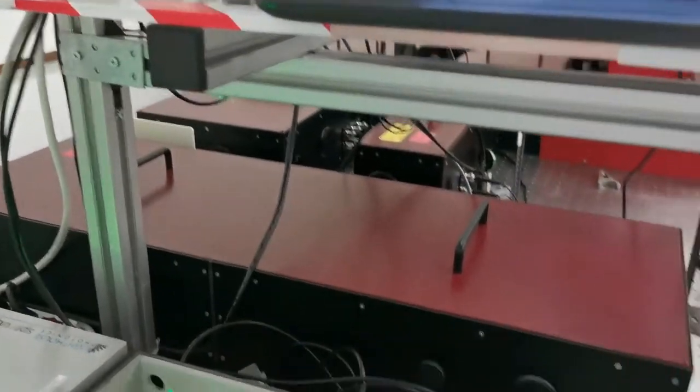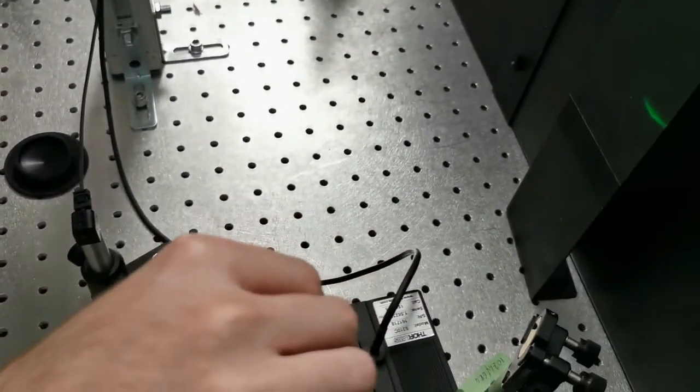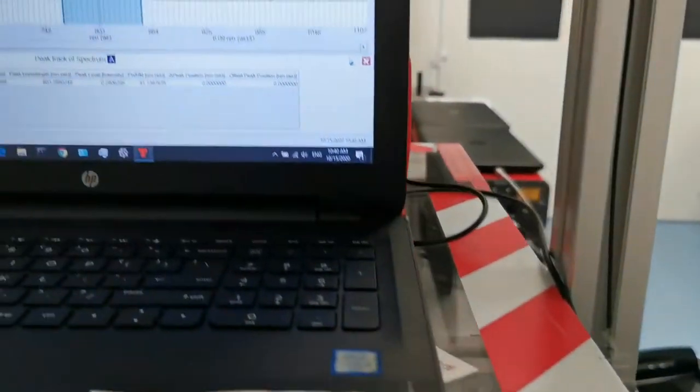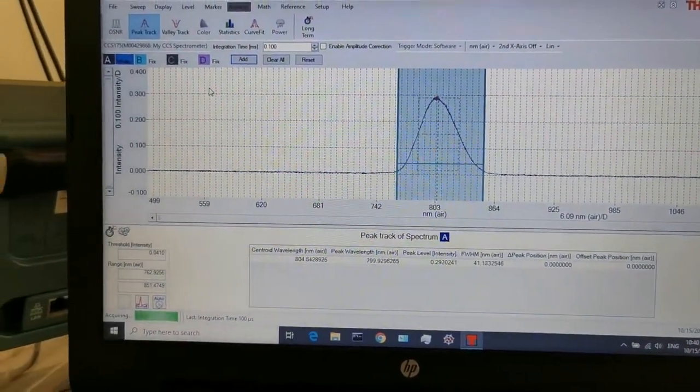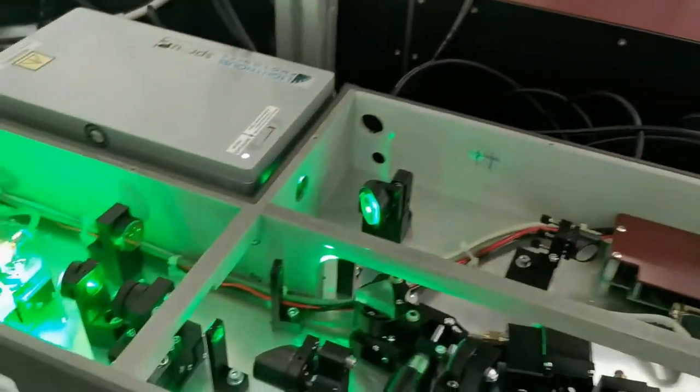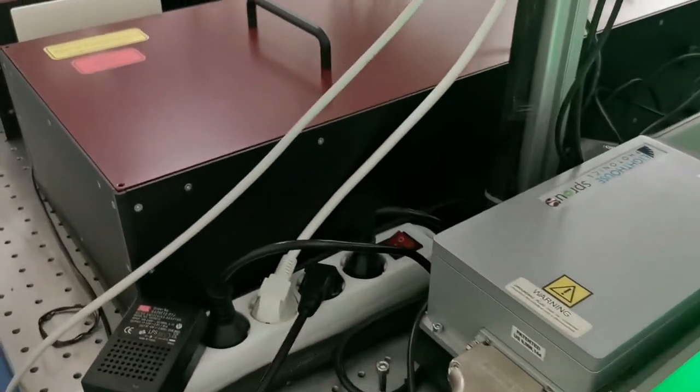The femtosecond oscillator is based on curl lens self-mode locking. Under the optimal alignment, the laser oscillator is able to generate ultra-short pulses at 800 nm with approximately 4 nJ pulse energy, 90 MHz repetition rate and about 50 nm spectral bandwidth, which corresponds to less than 20 femtoseconds pulse duration.